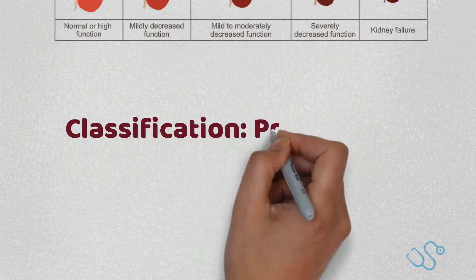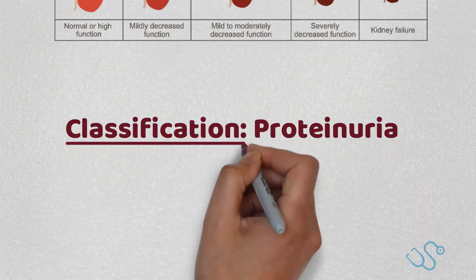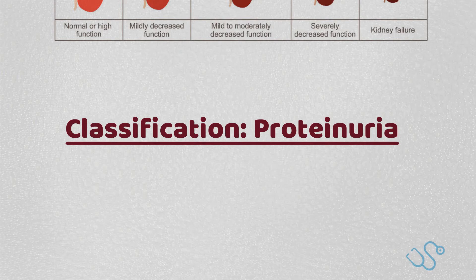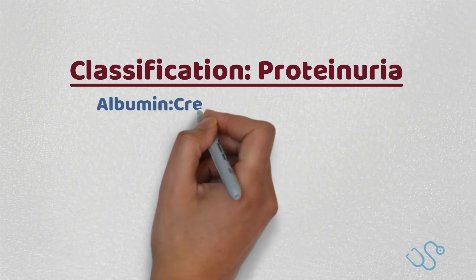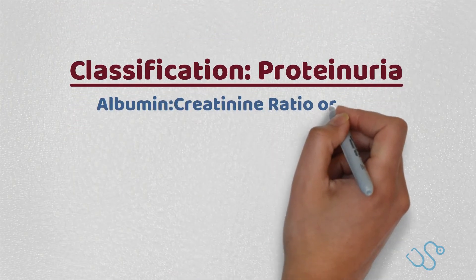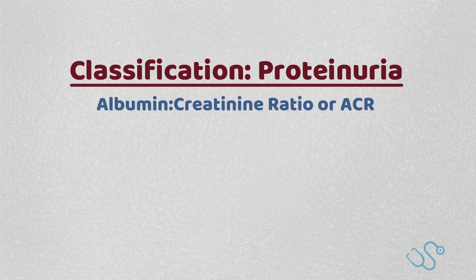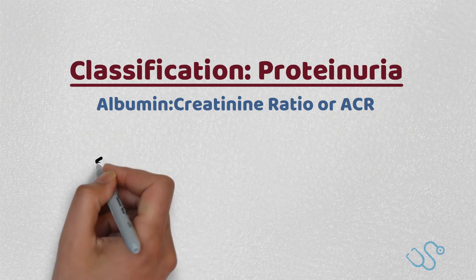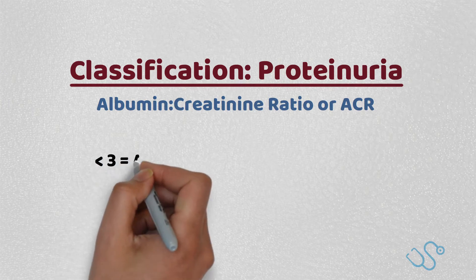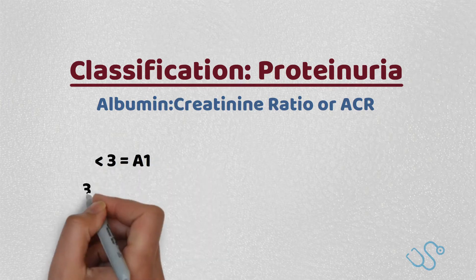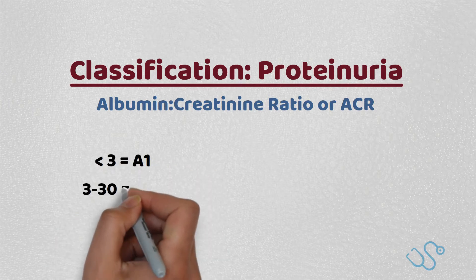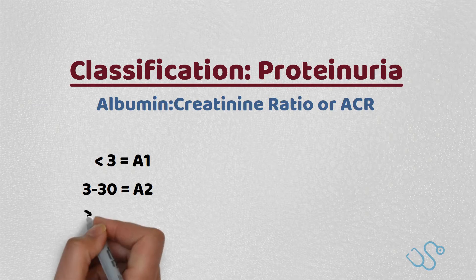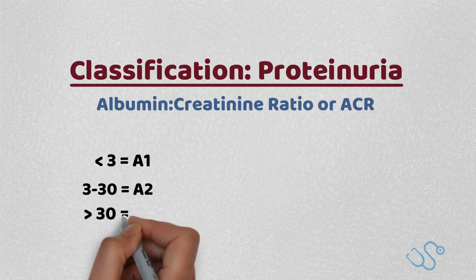Proteinuria helps quantify and classify the severity of CKD. Nowadays proteinuria is assessed by the albumin-creatinine ratio or ACR, which can be taken as a snapshot — usually a first-pass urine in the morning. Anything less than 3 is considered A1, anything between 3 and 30 is A2, and anything above 30 is A3.